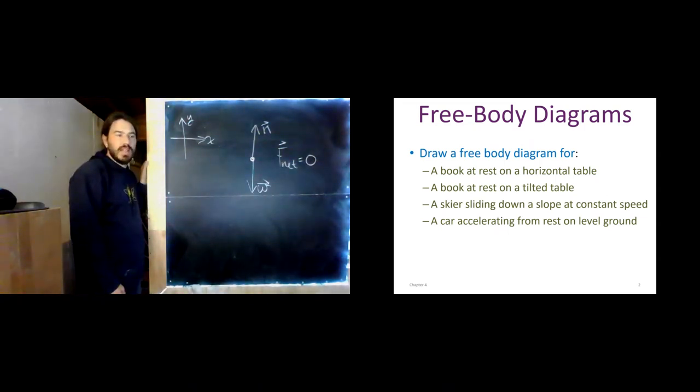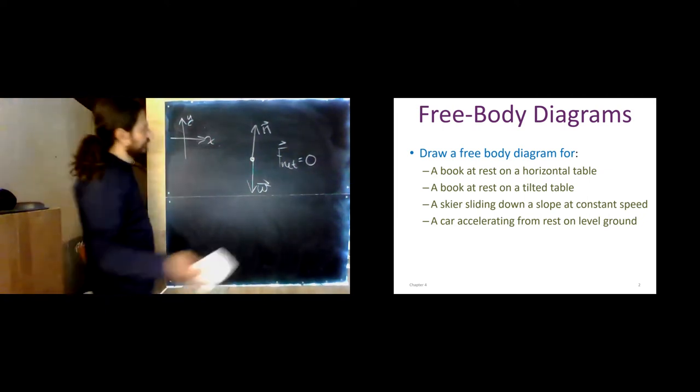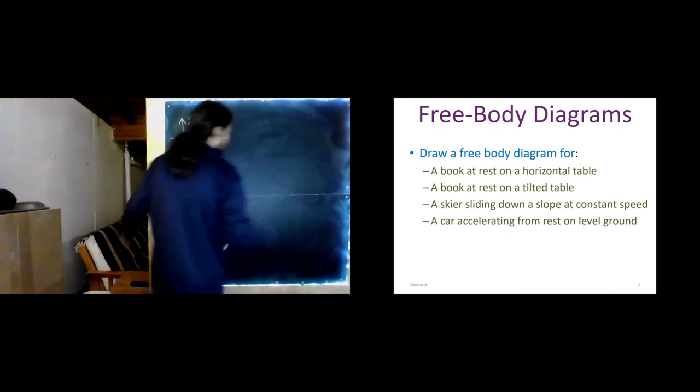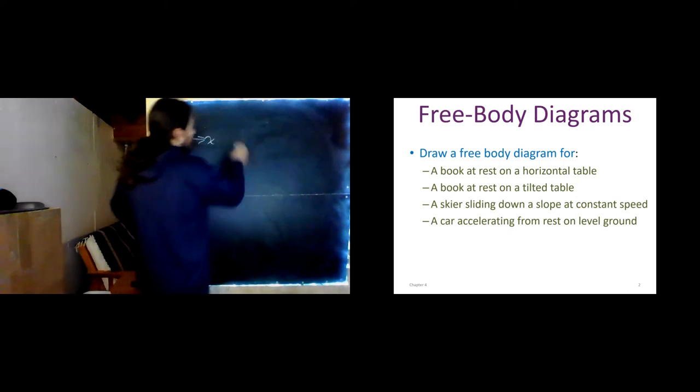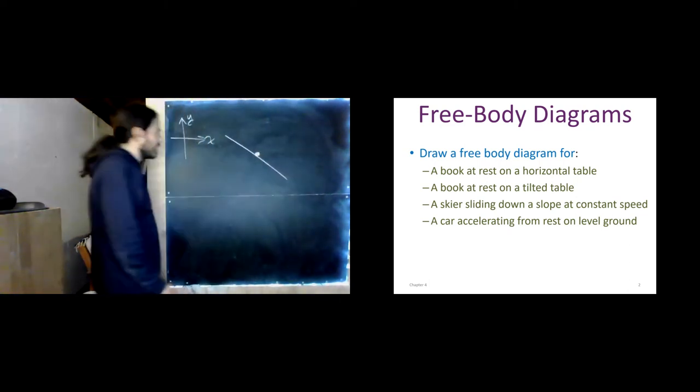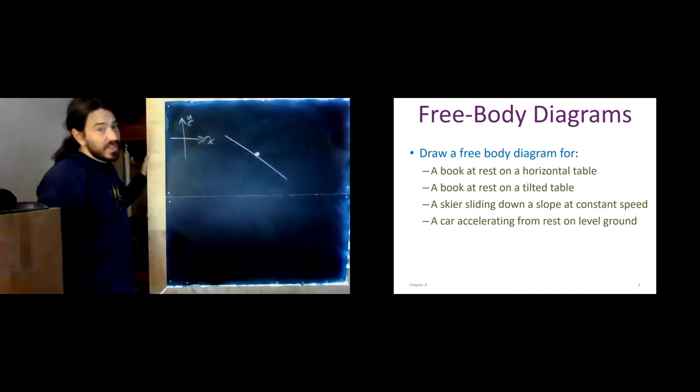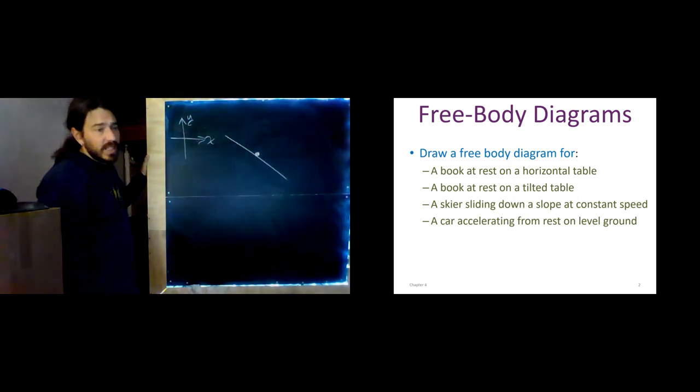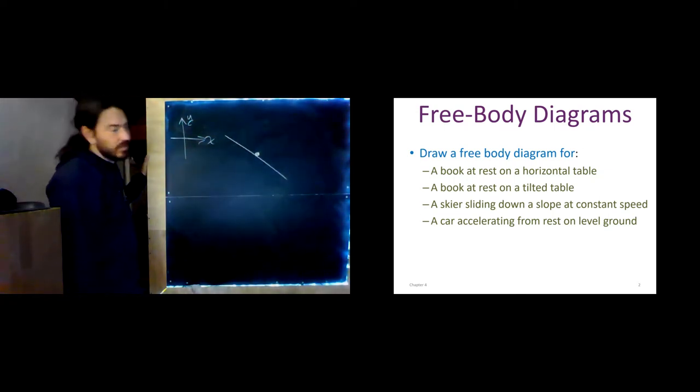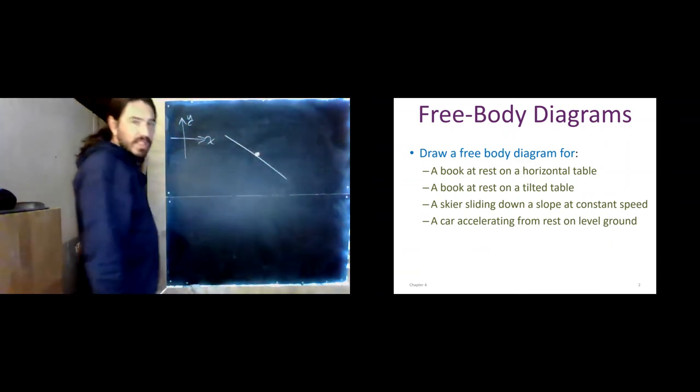A book at rest on a horizontal table. A book at rest on a tilted table. Let's do that. Here's our tilted table. Here's my book. Do we need to tilt our coordinate system? There's no acceleration. So, we don't need to tilt our coordinate system in order to constrain the acceleration to one dimension. Doesn't really matter. What forces do we have acting on it?